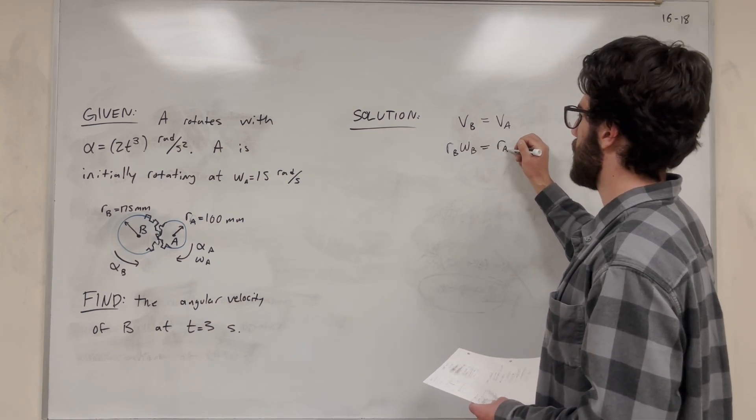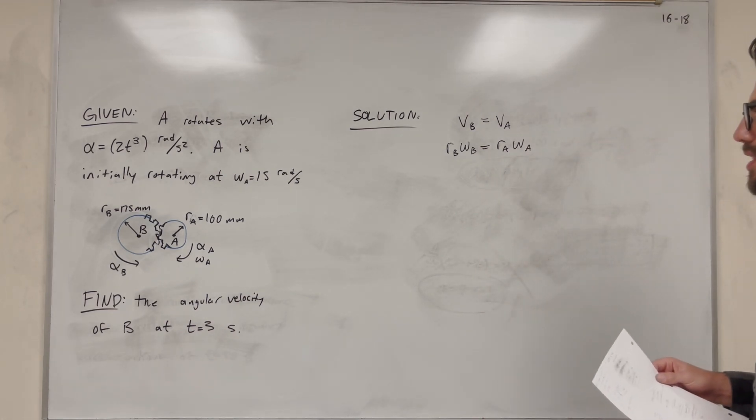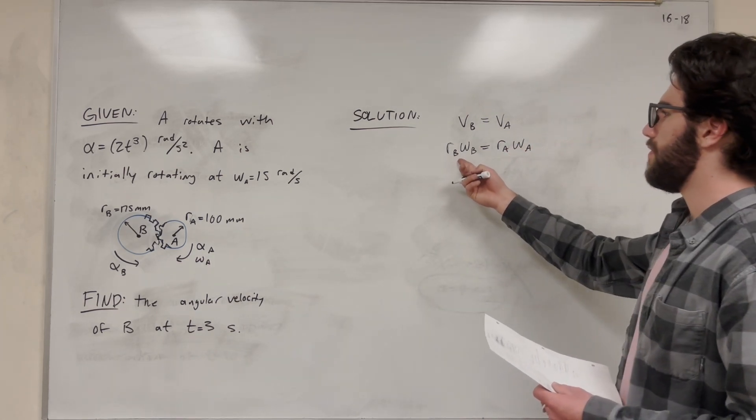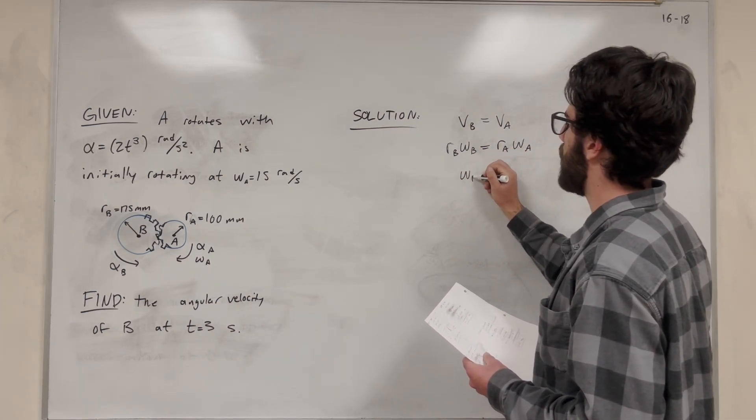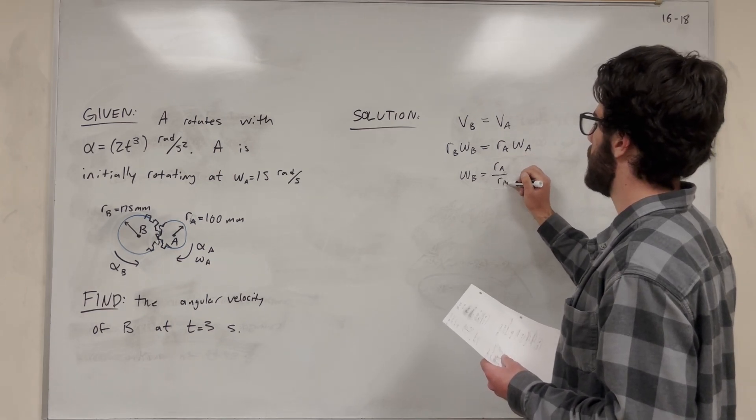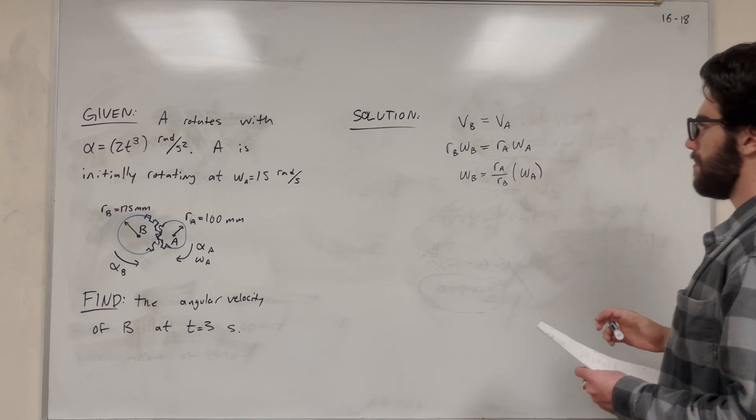So we can add that for both of these: radius of A, angular velocity of A. So what are we trying to find? The angular velocity of B. So let's divide by radius to get that by itself. The angular velocity of B equals radius of A over radius of B times the angular velocity of A.